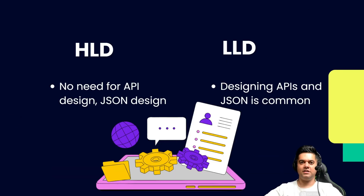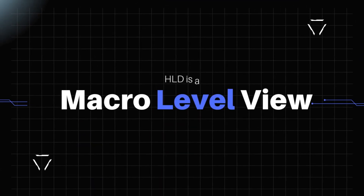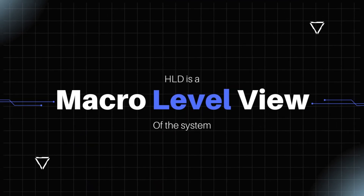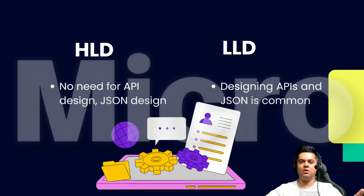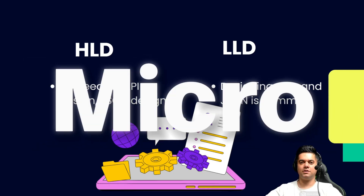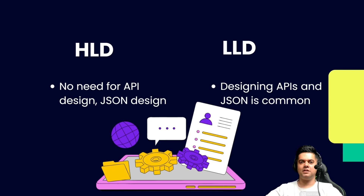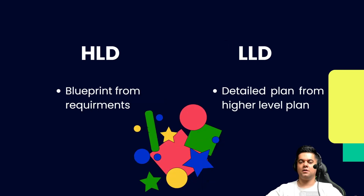API design with JSON object designing is again something you might do for an LLD round, but you're not required to do so for HLD. HLD is a macro level view of the system, whereas LLD is a more micro level view — and this is why designing APIs and JSON objects at the LLD stage makes more sense.